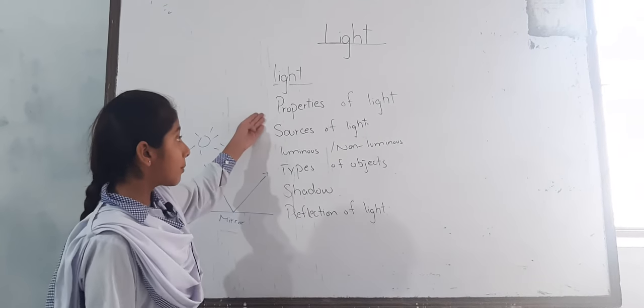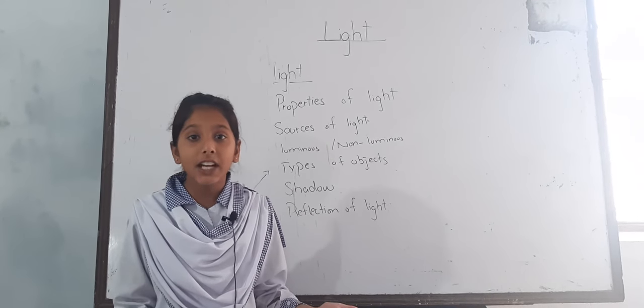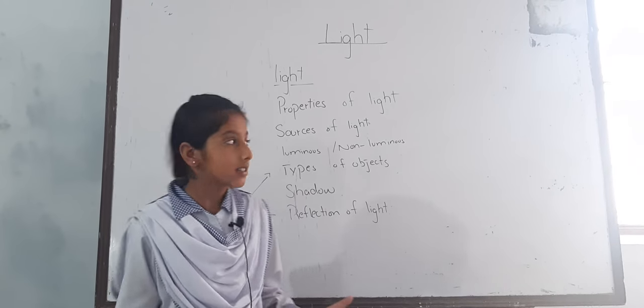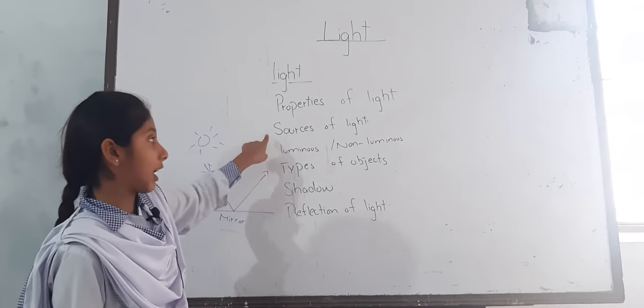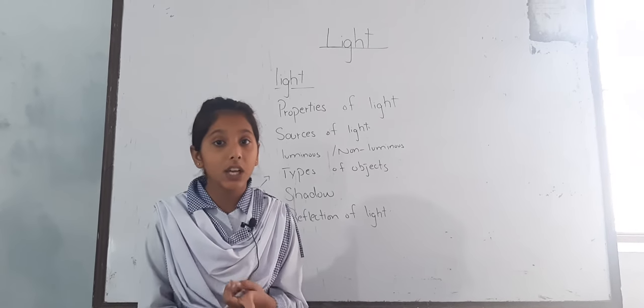Now I will tell you about properties of light. The light of sun is called sunlight. Sources of light: There are two main sources of light - artificial source and natural source.